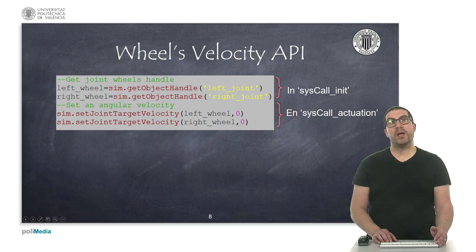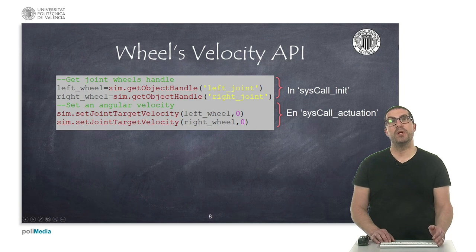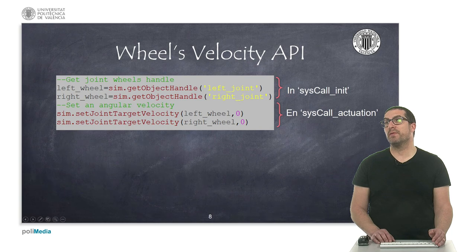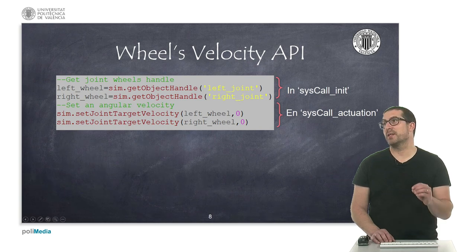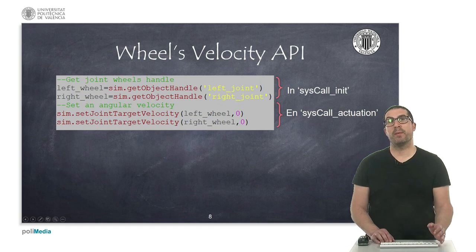We will need to set the wheels' velocity. Here we show you the API in order to do that. We need the object handle for each of the joints, and then we call the function setJointTargetVelocity. In this case we have set it to zero, but this will be changed based on the computations we are about to explain.